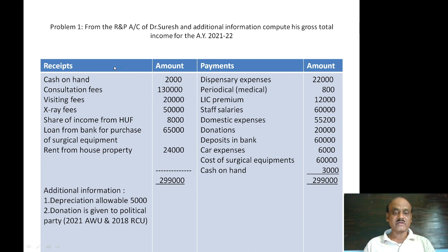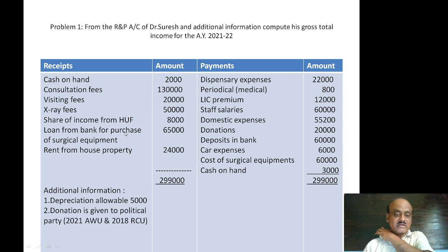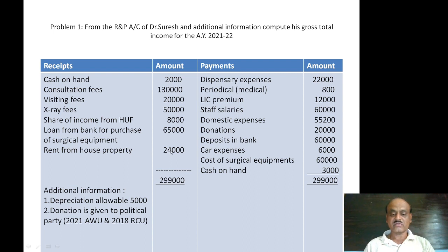The receipt and payment account is as follows. Receipts side: cash on hand Rs. 2,000; consultation fee Rs. 1,30,000; visiting fee Rs. 20,000; x-ray fees Rs. 50,000; share of income from HUF (Hindu Undivided Family) Rs. 8,000; loan from bank for purchase of surgical equipment Rs. 65,000; rent from house property Rs. 24,000.